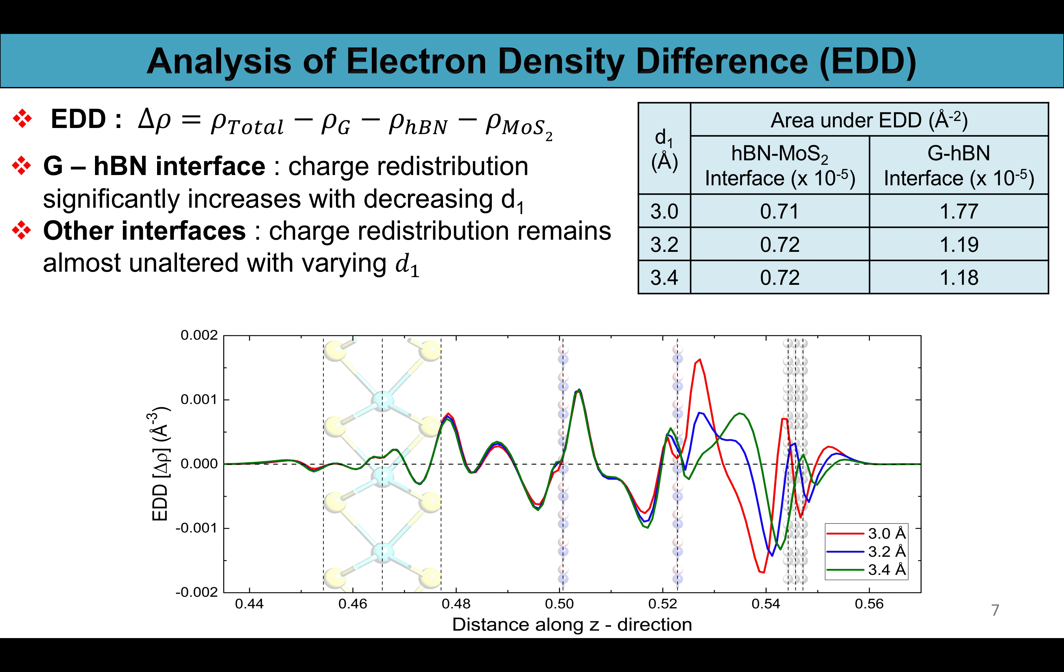It increases at graphene-hBN interface with decreasing d1 which remains almost unaltered at other two interfaces. When d1 is less than 3.2 angstrom the surface charge repulsion dominates at the graphene-hBN interface, and for d1 greater than 3.2 angstrom an accumulation region indicates the presence of strong orbital hybridization between graphene and hBN.